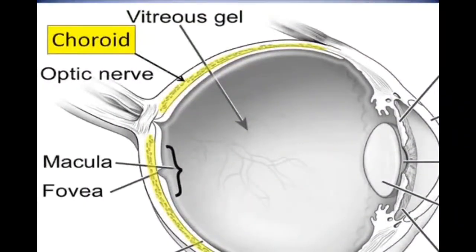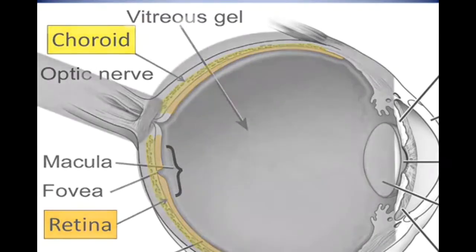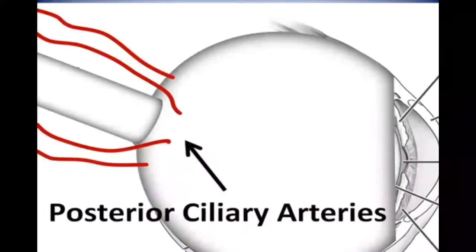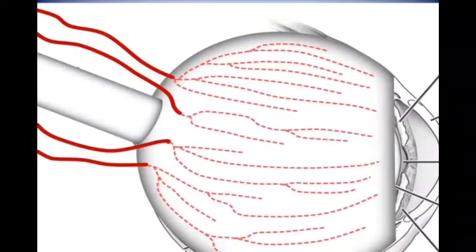Underneath the retina is a second pathway of circulation that supplies blood to the retina. This system's primary component is called the choroid. The choroid is a network of blood vessels situated in the wall of the eye underneath the entire retina. Here, the choroid is shown in yellow and the retina is shown in orange. The choroid is supplied oxygenated blood through a number of arteries, shown here in red, which enter the back wall of the eye at a distance from the optic nerve. These arteries are called posterior ciliary arteries. As these arteries enter the wall of the eye, they branch into the choroid — the vast network of vessels underlying the retina.